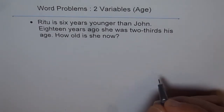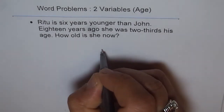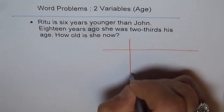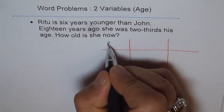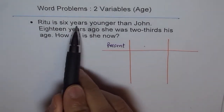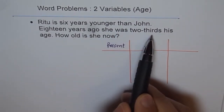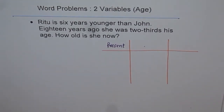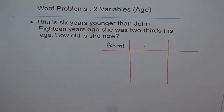In these problems, it is important to understand the situation. We are talking about two different times, so we can make a table to understand what is happening — the present condition and the condition given for 18 years ago. The age of Ritu and John are the variables, so we give the let statement and write down their ages.